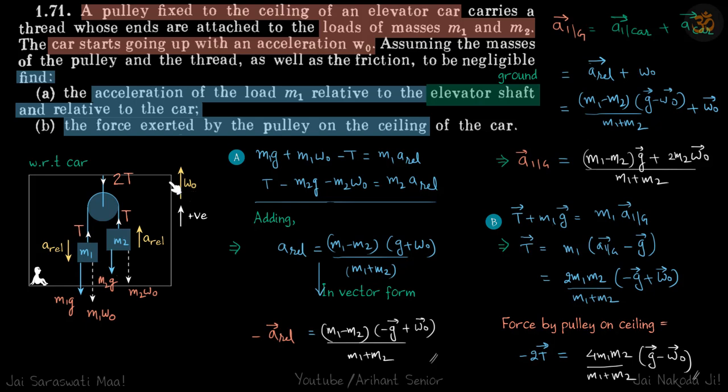The acceleration of the car is W naught upward. So the pseudo force will be downward: M1 times W naught on M1, and M2 times W naught on M2. So now this motion we can analyze with respect to the car.